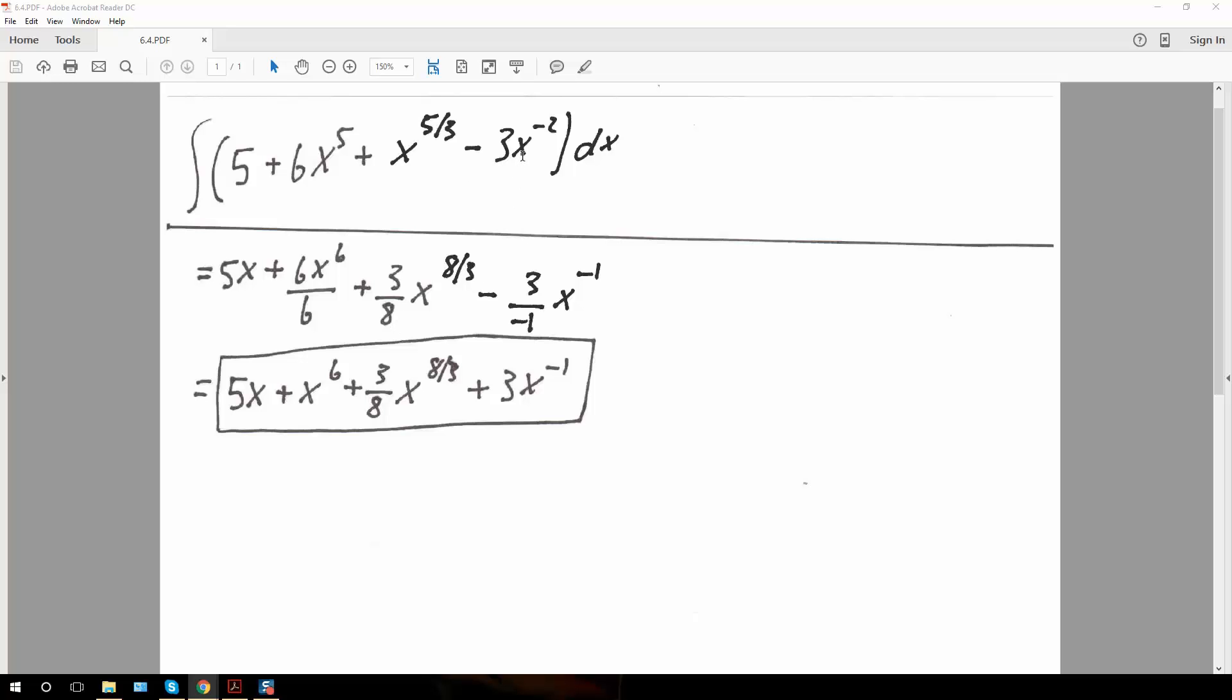Now we do negative 3 raised to the negative 2. We do negative 2 plus 1, which is going to be negative 1, divided by negative 1 is simply going to be a positive number.